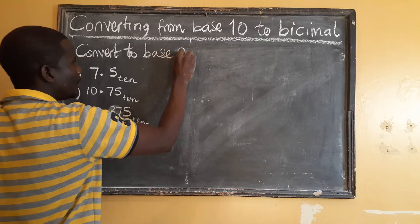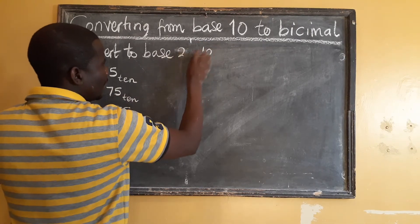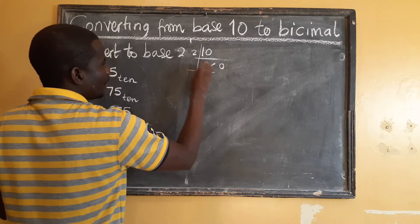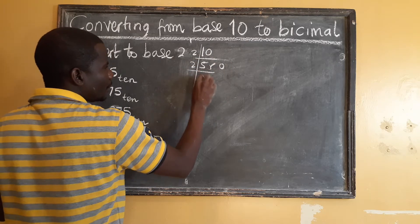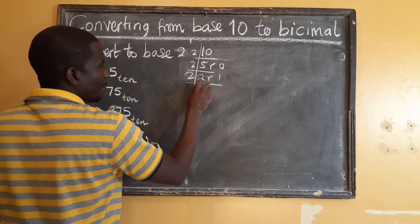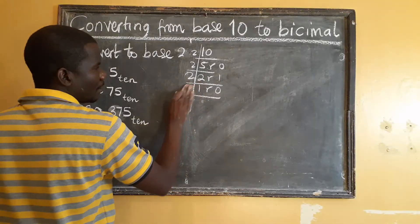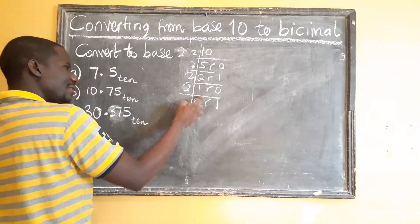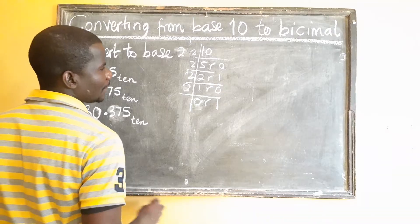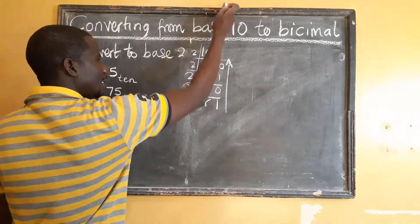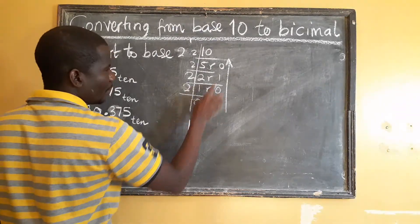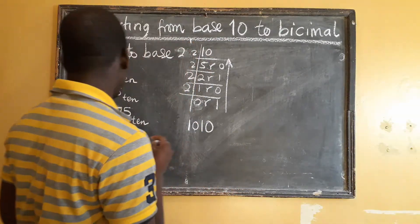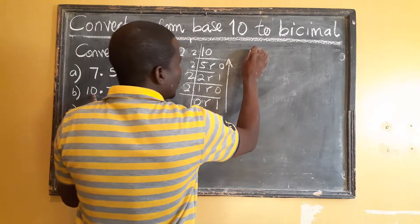On the second one, the whole number part is 10. So: 10 divided by 2 is 5 remainder 0; 5 divided by 2 is 2 remainder 1; 2 divided by 2 is 1 remainder 0; 1 divided by 2 is 0 remainder 1. Reading the remainders going up, we get 1010 — that is the whole number part.